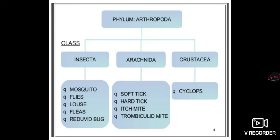Arthropoda is mainly divided into three classes: first, Insecta, which includes mosquitoes, flies, louse, fleas, and reduviid bugs; second, Arachnida, which includes soft tick, hard tick, itch mite, and trombiculid mite; and third, Crustacea, which includes Cyclops. Please remember these classes and arthropod names.